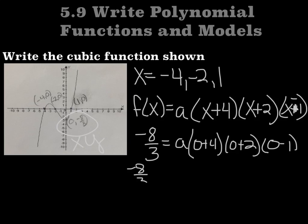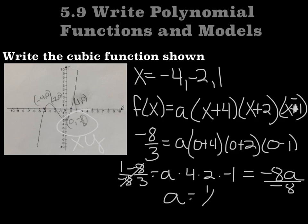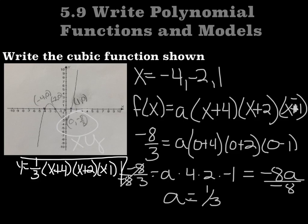So we've got negative 8/3 equals a times 4 times 2 times negative 1, which is going to be negative 8a. So if negative 8/3 equals negative 8a, and I divide both sides by negative 8, I get 1/3. a is 1/3. So now I can write my function. y equals, or f(x) equals, a is 1/3, and then I have x plus 4, and x plus 2, and x minus 1. You do not have to put this one in standard form, you can just leave it in factored form, just like that. Because this function gives you that graph.